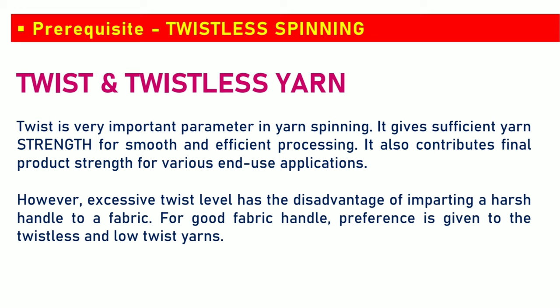Twist and twistless yarn. Twist is a very important parameter in yarn spinning. It gives sufficient yarn strength for smooth and efficient processing, and also contributes to final yarn strength for various end-use applications. However, excessive twist level has the disadvantage of imparting a harsh handle to a fabric. For good fabric handle, preference is given to twistless and low twist yarns.